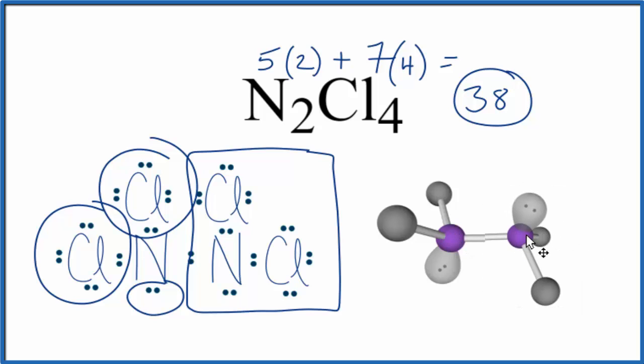And we have our two nitrogens in purple, and the molecular geometry, with respect to each nitrogen, would be trigonal pyramidal.